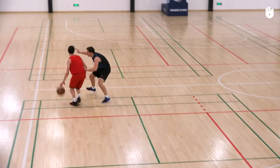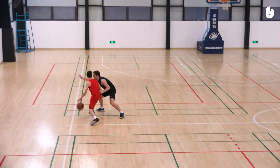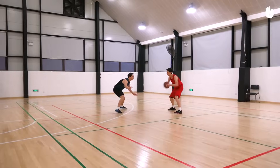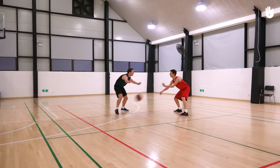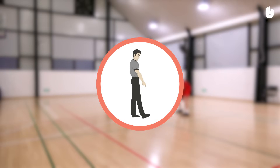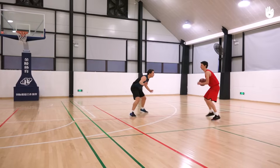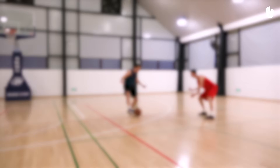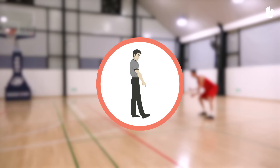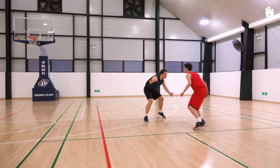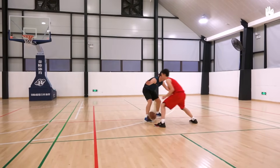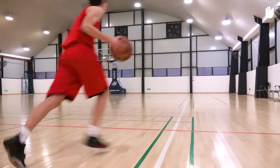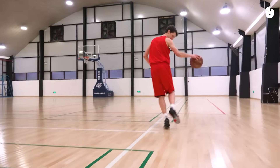The ball is considered over as soon as it crosses the center line. The fifth type of violation is kicking. In basketball, deliberately kicking the ball is not allowed. On the other hand, if the ball bounces off a foot by accident, the referee will let play continue.